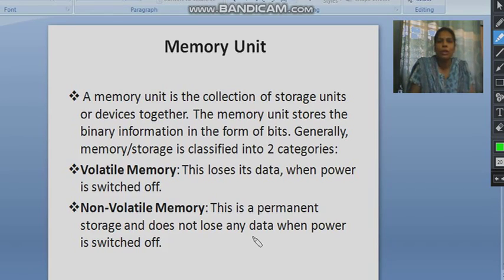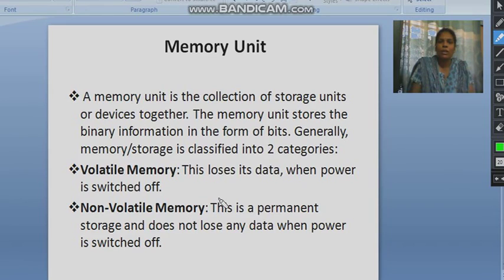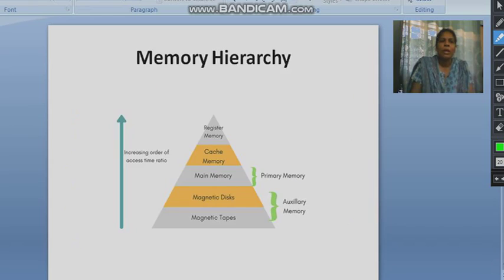The memory unit is the major component of the von Neumann architecture. Volatile memory is the memory where data is lost when power is switched off. On the other hand, in the case of non-volatile memory, data is not lost when power is switched off.